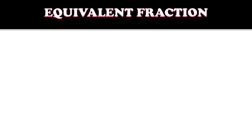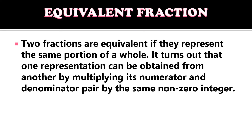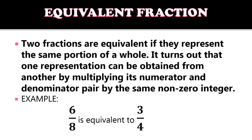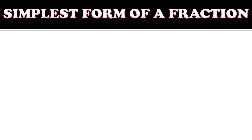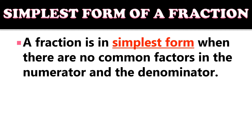Two fractions are equivalent if they represent the same portion of a whole. One representation can be obtained from another by multiplying its numerator and denominator by the same non-zero integer. For example, six-eighths is equivalent to three-fourths. A fraction is in simplest form when there are no common factors in the numerator and denominator — for example, five-sevenths.